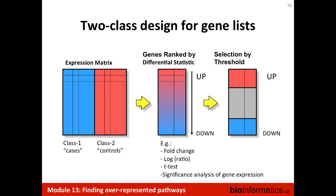An alternative is not to do any thresholding and let the pathway analysis take care of it, but that's a different approach. This will give you a gene list that you significantly trust. If it's a gene expression analysis, you could actually have two gene lists — one for genes going up and one going down according to some threshold — or you could have a mixed gene list. It's up to you, but maybe start with the simplest approach and just one gene list.